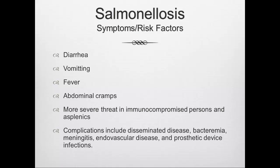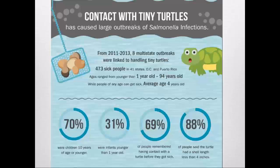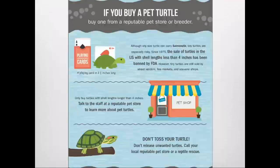Typical symptoms of Salmonellosis include diarrhea, vomiting, fever, and abdominal cramps. Immunocompromised or asplenic persons are at particular risk for complications including disseminated disease, DIC, meningitis, and prosthetic device infections. Snakes, lizards, and frogs can also be a source of human Salmonella infections — if you keep reptiles as pets, be careful.